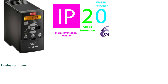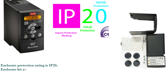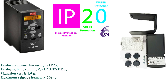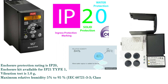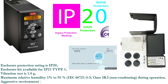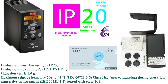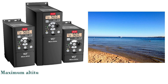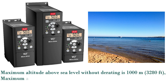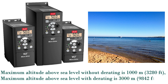Enclosure protection rating is IP20; enclosure kit available for IP21 type 1. Vibration test is 1.0 g. Maximum relative humidity 5% to 95% per IEC 60721-3-3 class 3K3, non-condensing during operation. Aggressive environment per IEC 60721-3-3 coded class 3K3. Maximum altitude above sea level without derating is 1,000 meters (3,280 feet); with derating is 3,000 meters (9,842 feet).